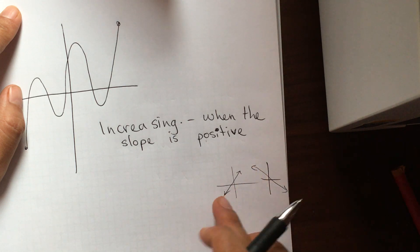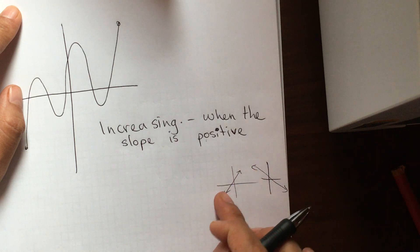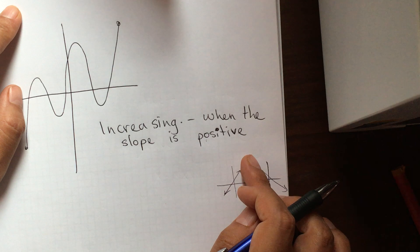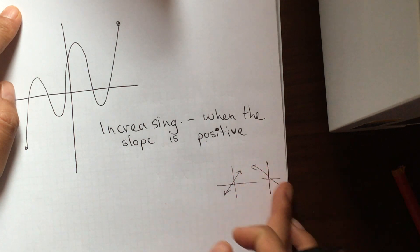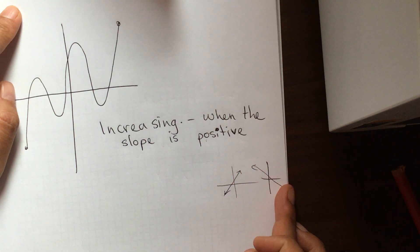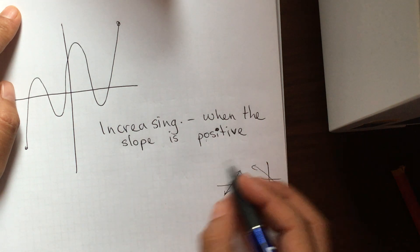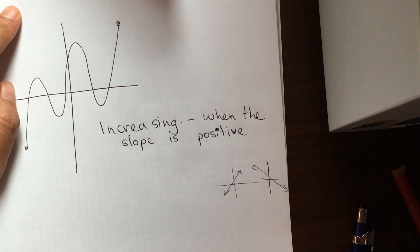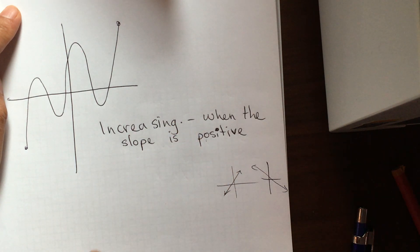From left to right going up means the slope is positive. From left to right going down means the slope is negative. So increasing would be all of the areas where the graph is going up from left to right.